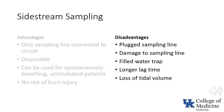There are disadvantages to sidestream sampling. The sampling line has a small diameter and may become plugged with secretions. Furthermore, it may become damaged, resulting in erroneous values. In addition, the water trap may become filled with condensation, resulting in inaccurate readings. The slower response time due to the need to move sampled gas through the length of the sampling line to the measurement site is inconvenient when awaiting results to confirm correct placement of a tracheal tube. Finally, there is the loss of tidal volume discussed previously.